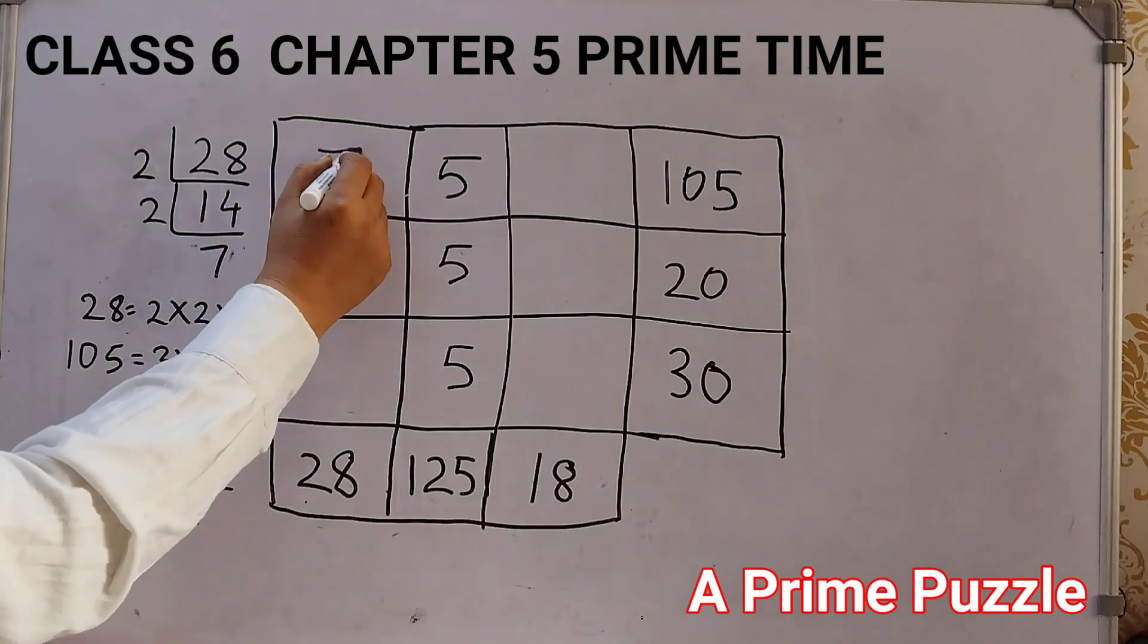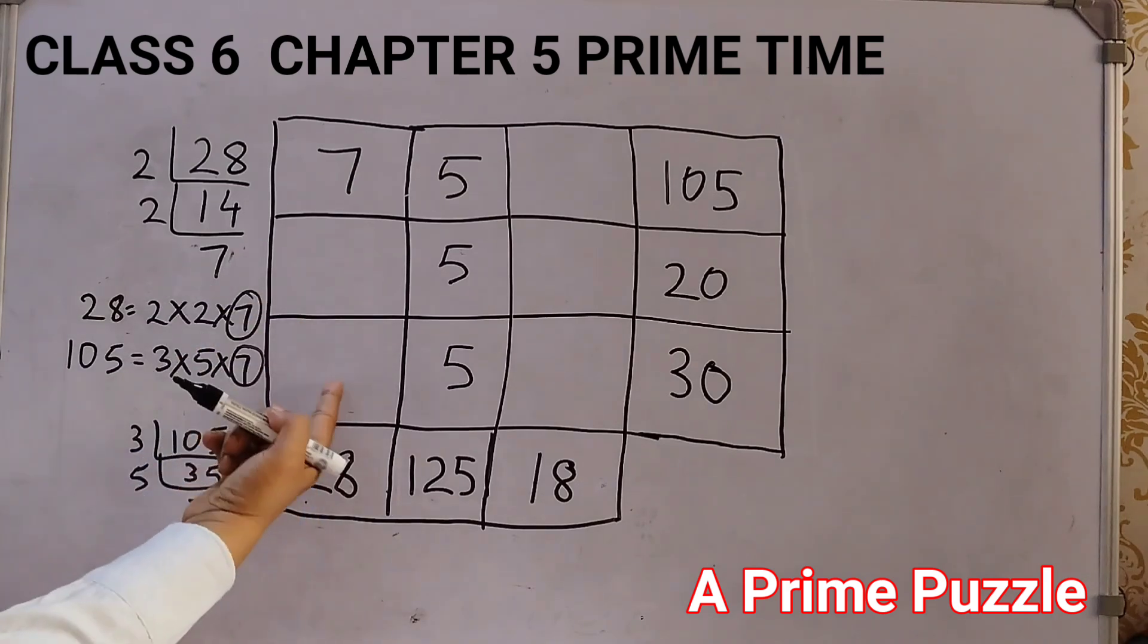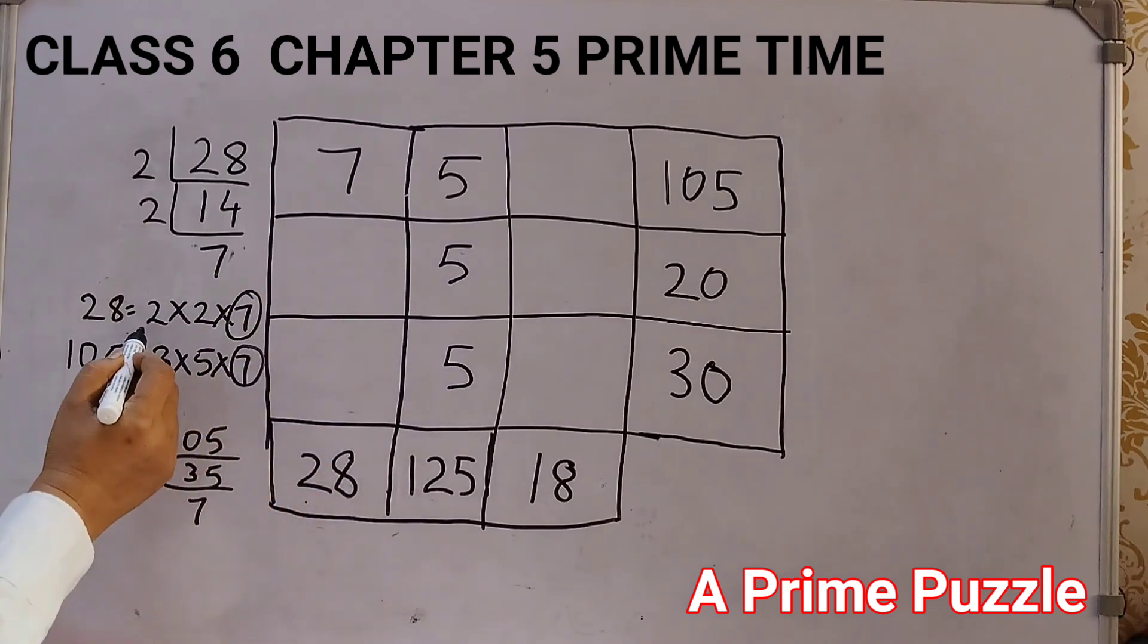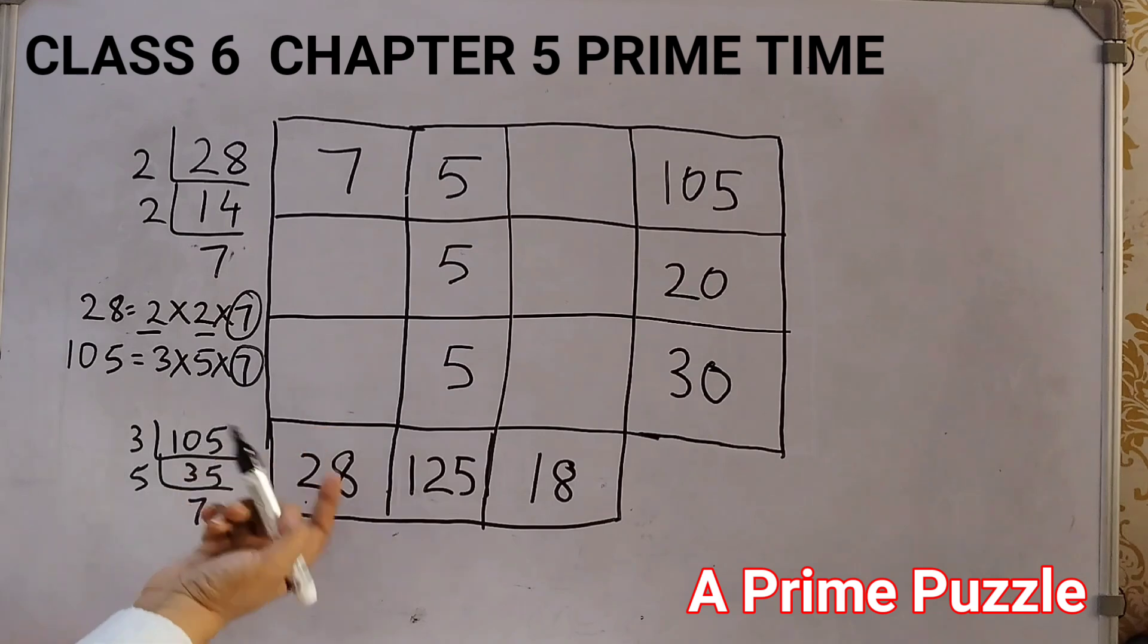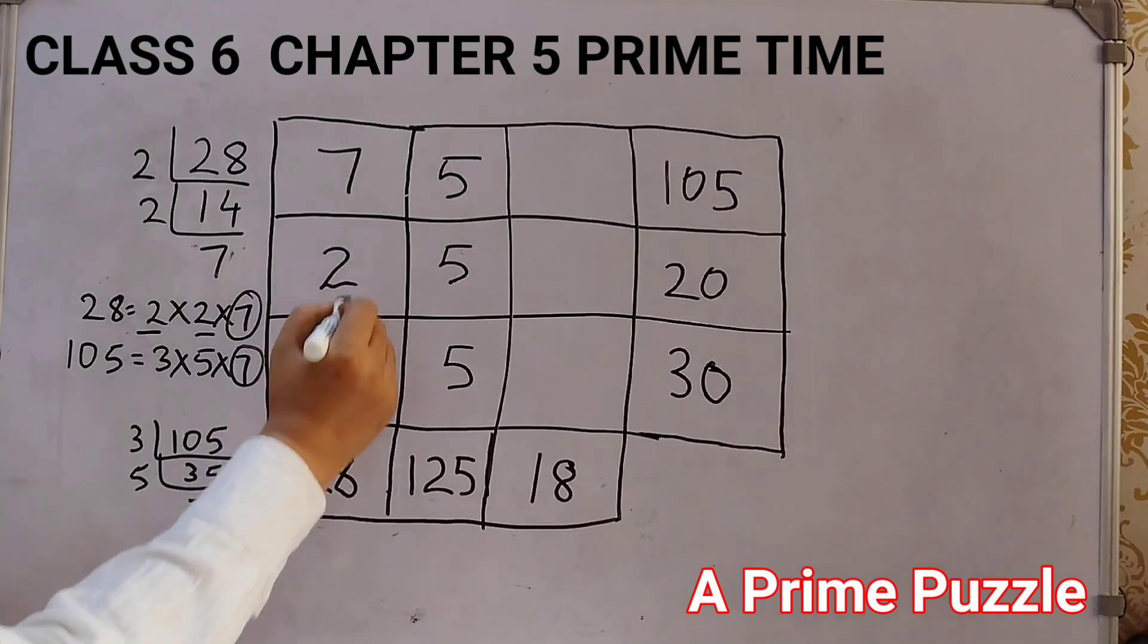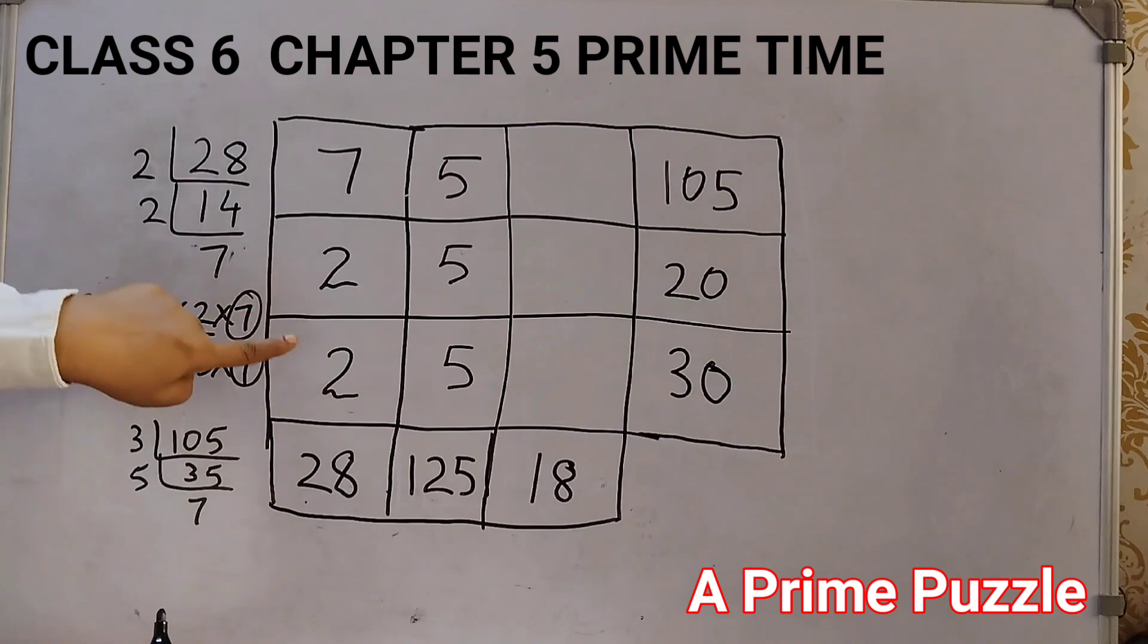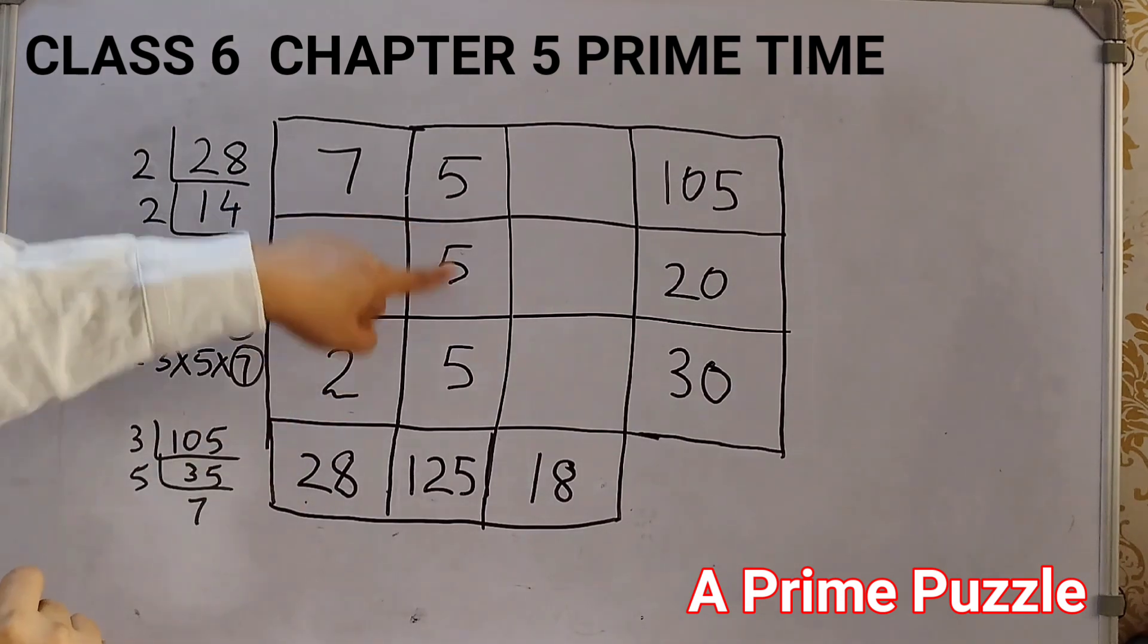This common number, we can write here because this is common to both, 28 and 105. So, we will write here 7. Now, what is left here? For 28, we have 2 and 2. So, it doesn't matter where we fill up the number. So, we will write 2, 2. 7 2s are 14, 14 2s are 28. We have filled up 2 columns.